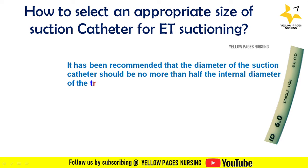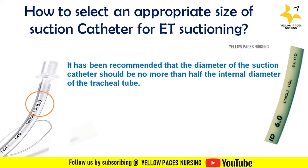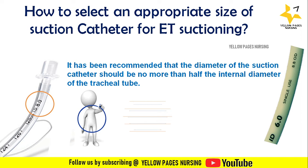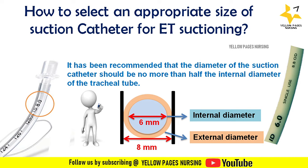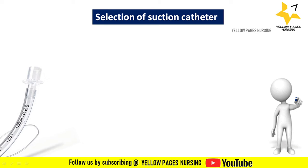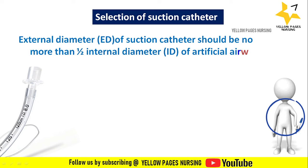Looking at the images, the label 'ID' refers to internal diameter. The images show two suction catheters with internal diameters of 8 and 6. Taking the catheter with internal diameter 6 as an example, its external diameter will be 8. When performing endotracheal suctioning, always consider the internal diameter, which is marked on all endotracheal tubes. Knowing the ET tube's internal diameter makes it easy to select the appropriate catheter size using the following formulas.